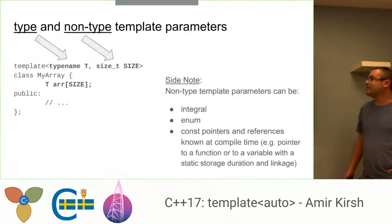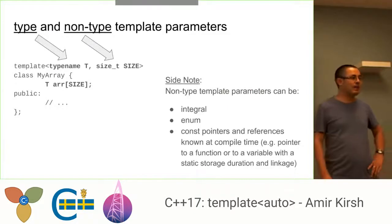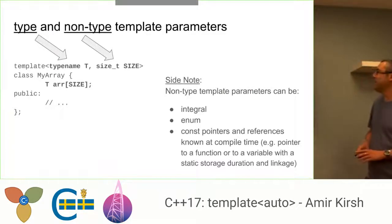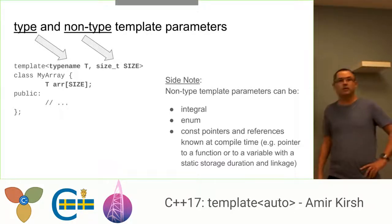So it starts with type and non-type template parameters. You know that in a template you can have type parameters and non-type parameters. Like in this example, myArray is using typename T for the type and size, which is size_t for its size. Both are known at compile time. You probably remember the rules for what can be the non-type parameter. This is just a reminder.